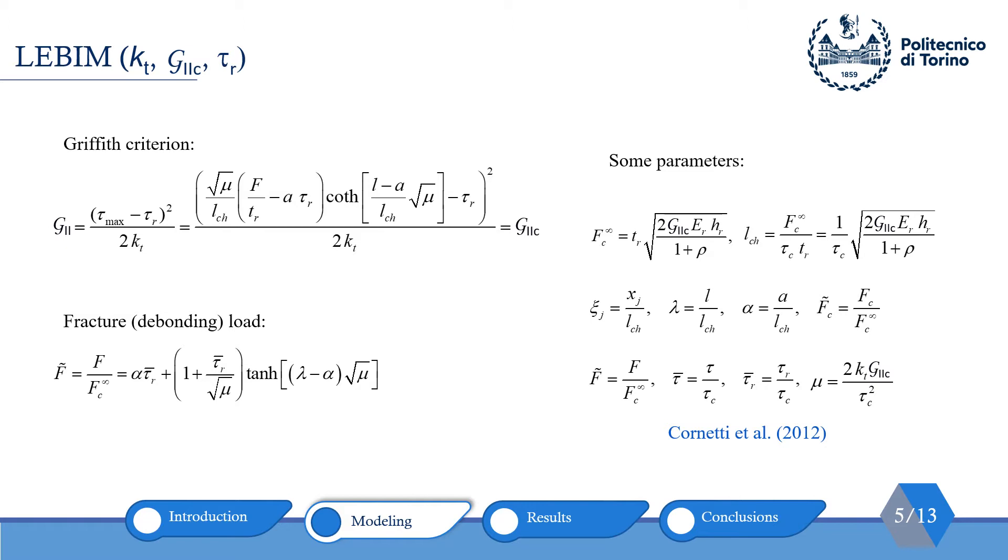The expressions for this criterion can be seen on the left-hand side. Also, we use some parameters for normalization, for example, Fc_infinity, which is maximum transferable load for sufficient elongated length in the absence of residual strength. And L_ch is the overlap length at the reference that endorses Fc_infinity if interfacial stress is constant and equal to tau_c. Another important parameter is mu that contains some important parameters and in results, we are going to talk about it.